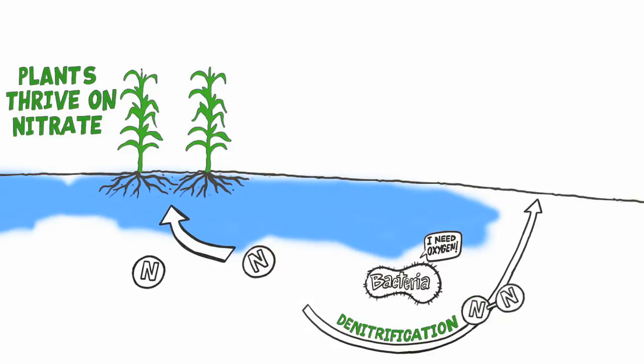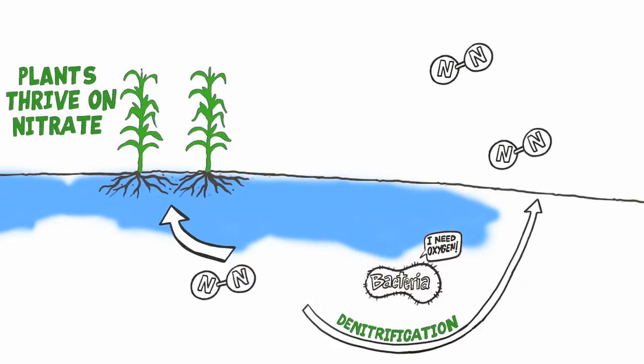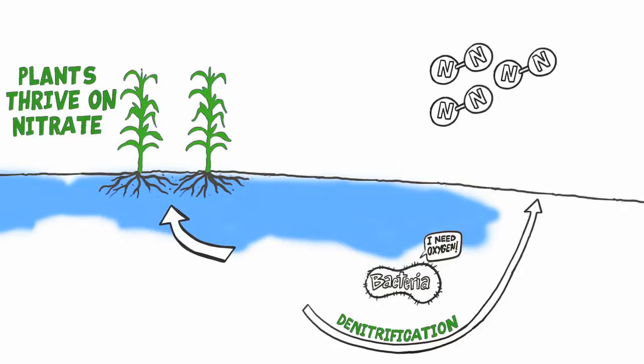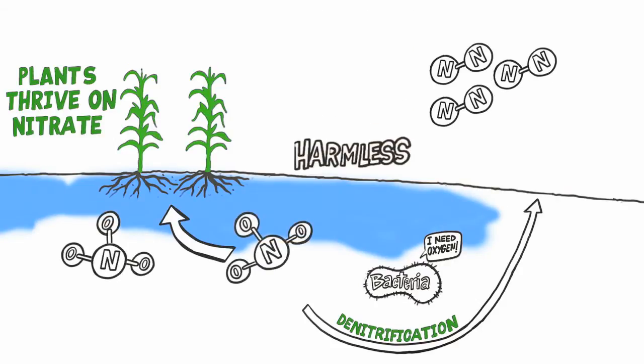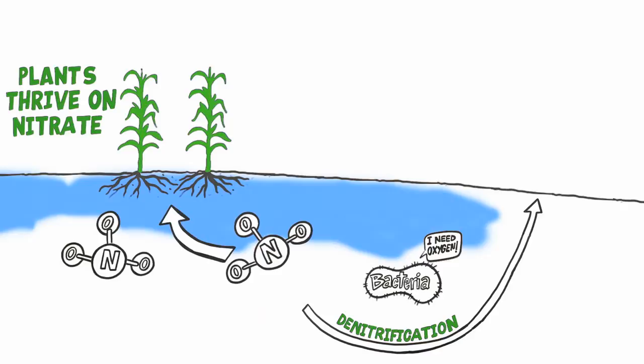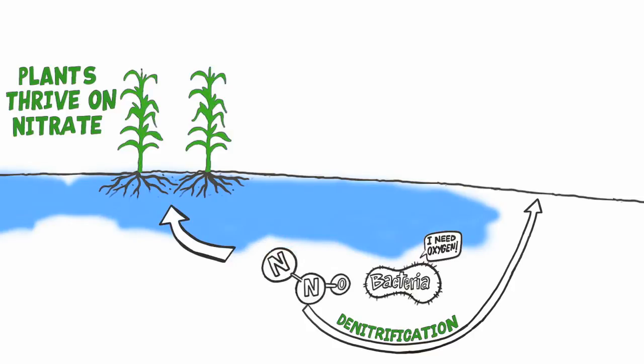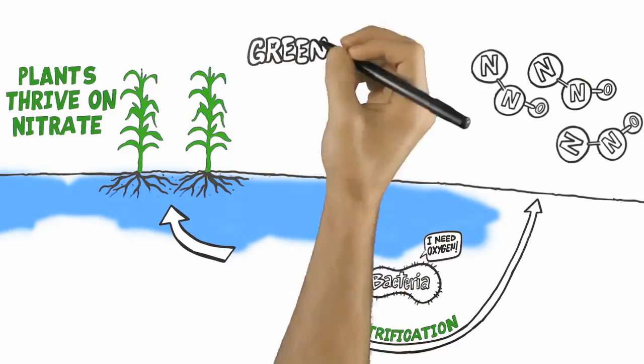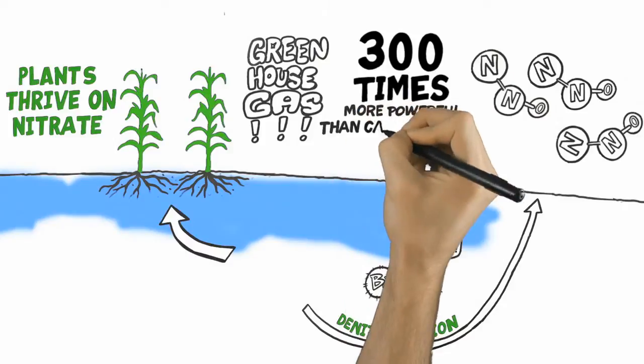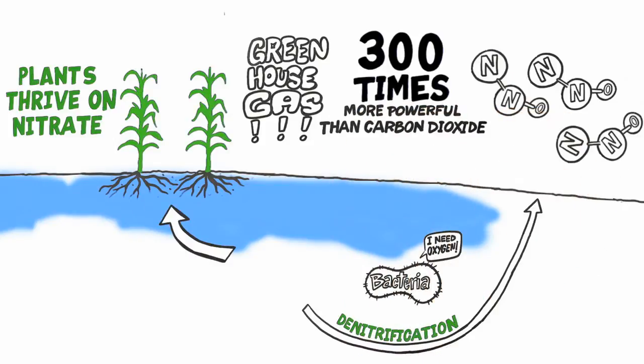Most of the gas released through denitrification is in the form of N2, which is naturally occurring and makes up almost 80% of the air we breathe. But a small amount is in the form of nitrous oxide, N2O, a greenhouse gas 300 times more powerful than the most common greenhouse gas, carbon dioxide, CO2.